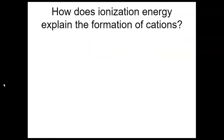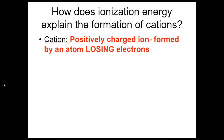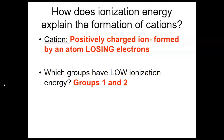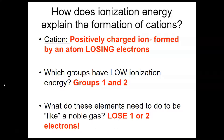Ionization energy is related to losing electrons. Cations are positively charged ions formed by an atom losing electrons, and in the next unit we'll look at cations and anions and how they come together. Groups one and two have low ionization energy, so things like sodium, potassium, and rubidium will lose one electron, and beryllium, magnesium, and calcium will lose two electrons, because they also have low ionization energies.